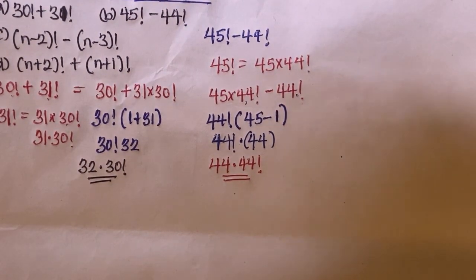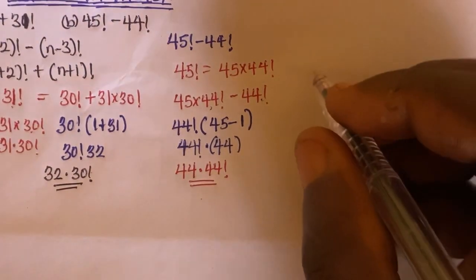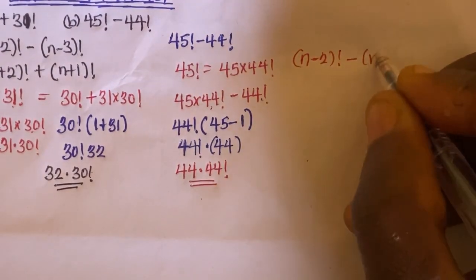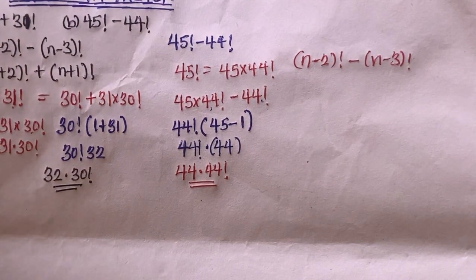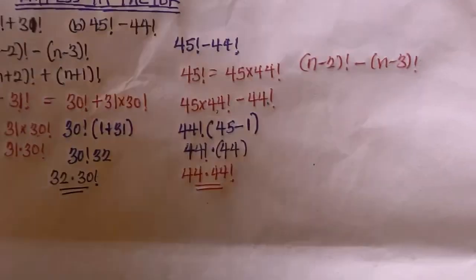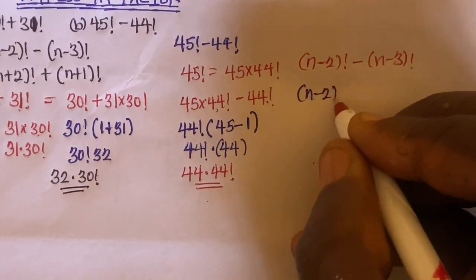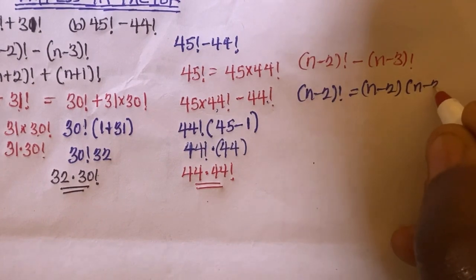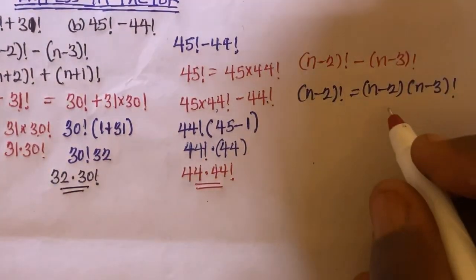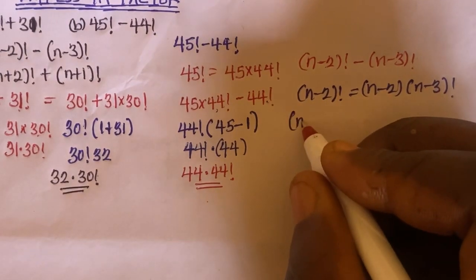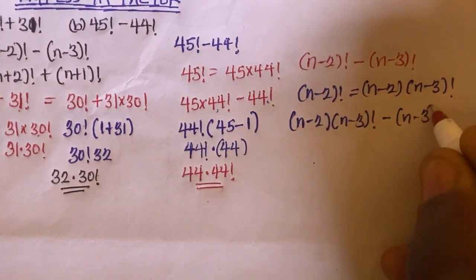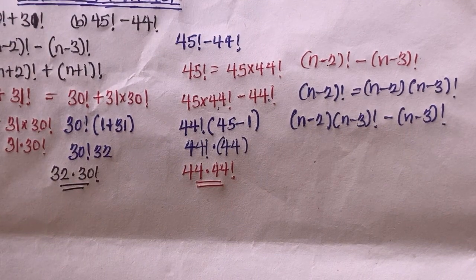The third question is (n minus 2) factorial minus (n minus 3) factorial. Between n minus 2 and n minus 3, n minus 2 is the higher value. So we can represent (n minus 2) factorial as (n minus 2) times (n minus 3) factorial. Substituting, the expression becomes (n minus 2) times (n minus 3) factorial, minus (n minus 3) factorial. Since (n minus 3) factorial is common, we can factorize it out.